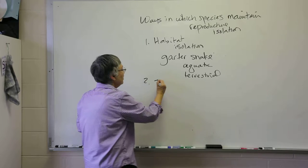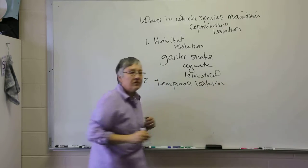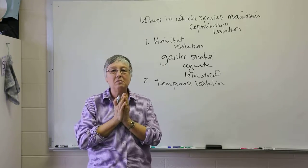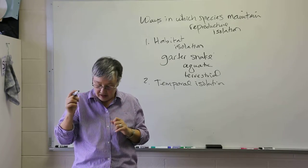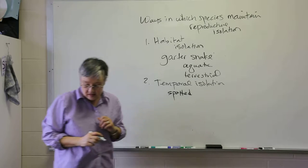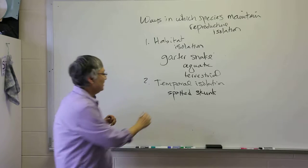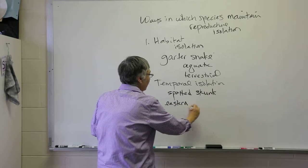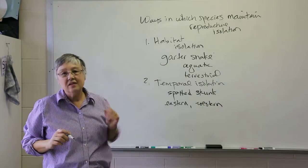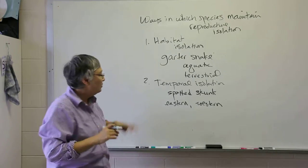The second category that I call temporal isolation refers to the fact that some similar species might breed at different times of the year. For example, the spotted skunk. There's an eastern and a western species in the United States, and their ranges actually overlap somewhat, but they reproduce at different times.